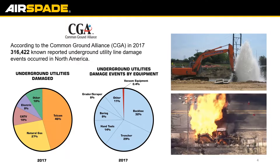Some great figures here from back in 2007 from the CGA — there were over 316 utility strikes in North America. The colored chart shows what damages occurred on which lines, with the telecommunication and natural gas industries being the largest. The blue chart shows what equipment is causing those damages, with backhoes and trenchers — more traditional means — being the top equipment responsible for those damages.